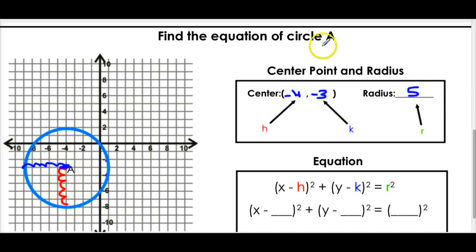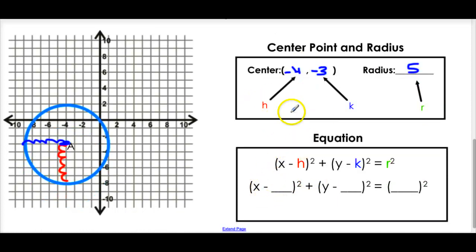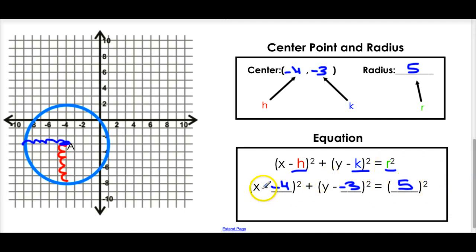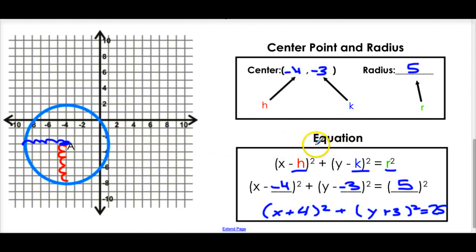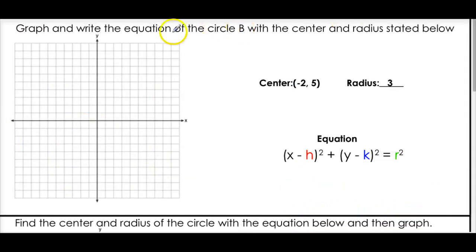Now we plug in h, k, and r. Our h is -4, so it's x minus negative 4; y minus negative 3; and the radius is 5 squared. Simplifying: minus a negative is plus, so it's (x + 4)² + (y + 3)² = 25. The center was (-4, -3) but in the equation you change the signs to +4 and +3.